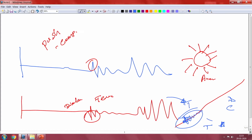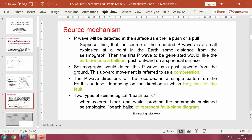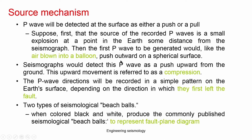Today we are going to discuss in detail how to get the source mechanism at a particular place due to a particular earthquake. The P wave detected at the surface is either a push or pull. If the first recorded P wave is from a small explosion, the P wave generated would be like an air balloon — pushing outward as a spherical surface wave. Seismogram would detect the P wave as a push upward, which is referred to as compression. Two types of seismological beach balls are used: a colored beach ball and a black-and-white beach ball.